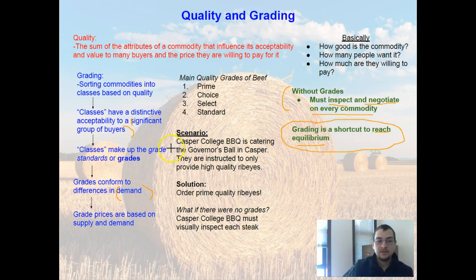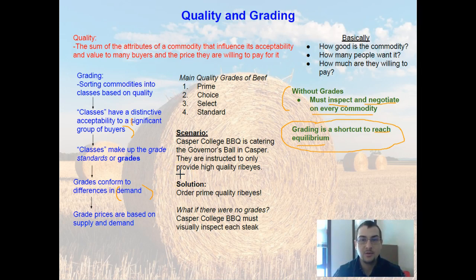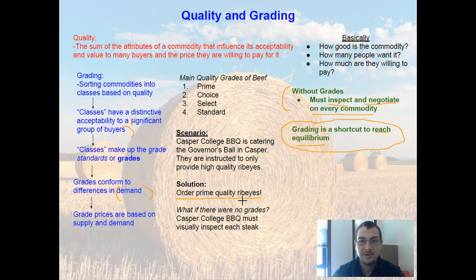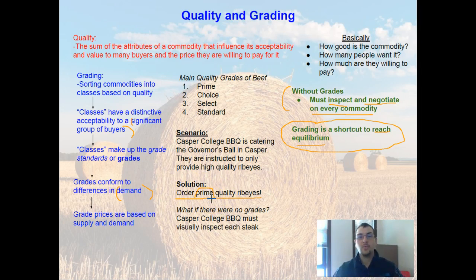Consider this scenario: the Casper College BBQ is catering the governor's ball in Casper and was instructed to provide only high quality ribeyes. In a world with grades, the solution is simple — order only prime quality ribeyes. Not every ribeye steak is exactly the same, there will be some differences, but if you order prime steaks you can be reasonably sure all of them will be of high enough quality that a significant group of buyers would want them.